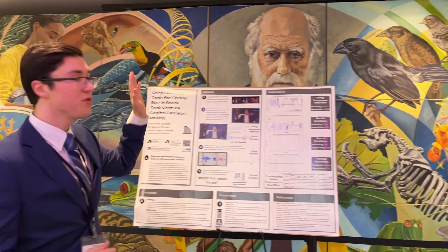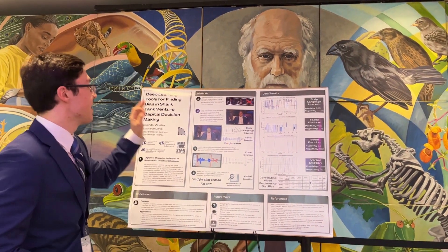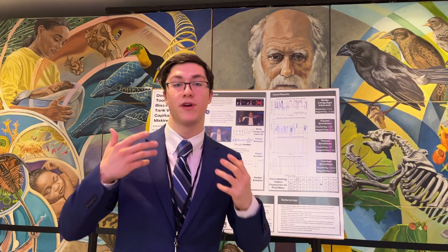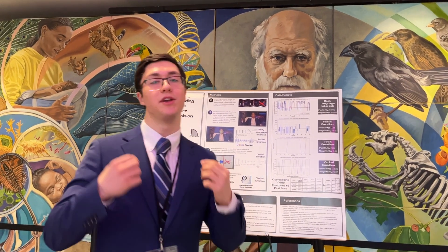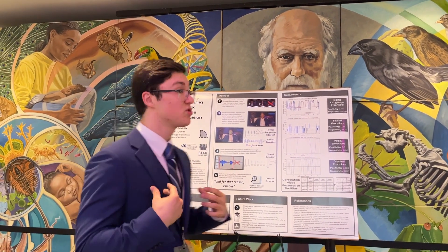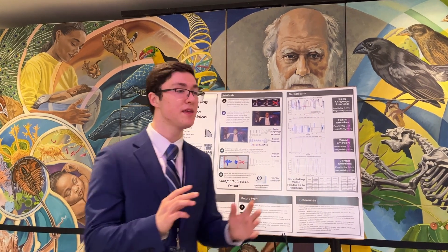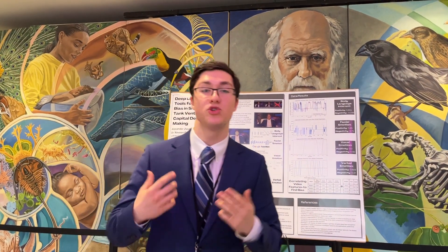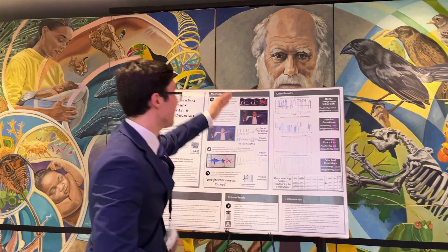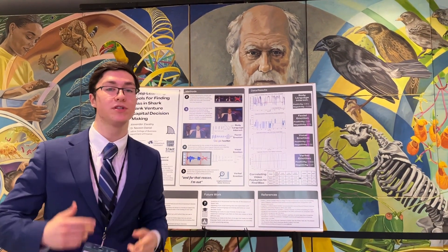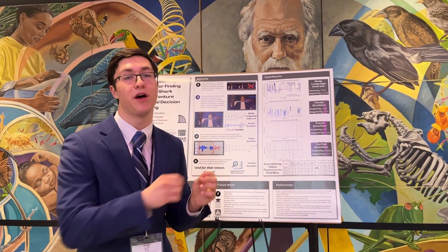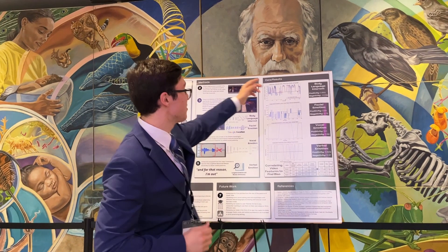How this works is I go through different episodes of Shark Tank and I only look at the parts where the sharks themselves are featured on camera. To analyze the body language, I do pose detection. I take those coordinates of the body positions and put them into a convolutional neural network I built, which then outputs an interest level at that moment in time. I graph the interest levels over time and then aggregate them to get one single value for all the sharks as well as individual values for each shark. That's how I get the positivity score for the body language.